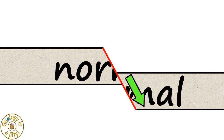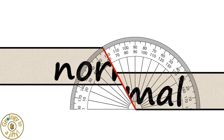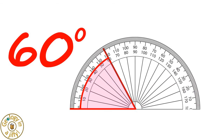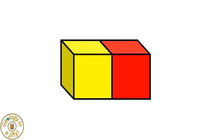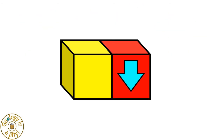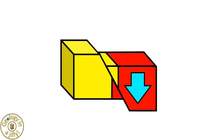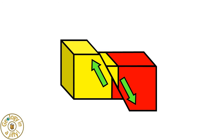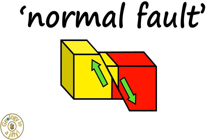This movement on either side of the fault displaces the layer at an angle of about 60 degrees. As the rock is stretched apart, gravity forces part of the rock downwards, down and along the fault plane, the other block moving upwards in relation to the moving block, forming a normal fault.